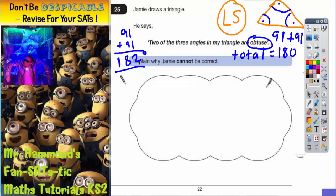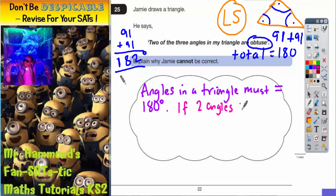Now the way of explaining this would be to say that angles in a triangle must equal 180 degrees. If two angles are obtuse, the smallest they could be is 91 each. We should be saying 91 degrees.